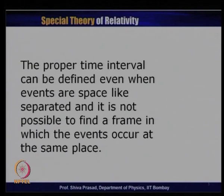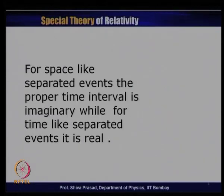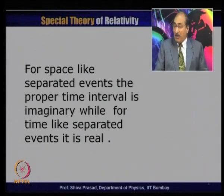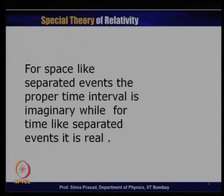The proper time interval can be defined even when the events are space-like separated. When events are space-like separated, it is not possible to find a frame in which they occur at the same place, so the proper time interval will be imaginary. For time-like separated events, it will be real, because it is always possible to find a frame in which the two events occur at the same position, giving a real time measurement. We gave examples to confirm this.